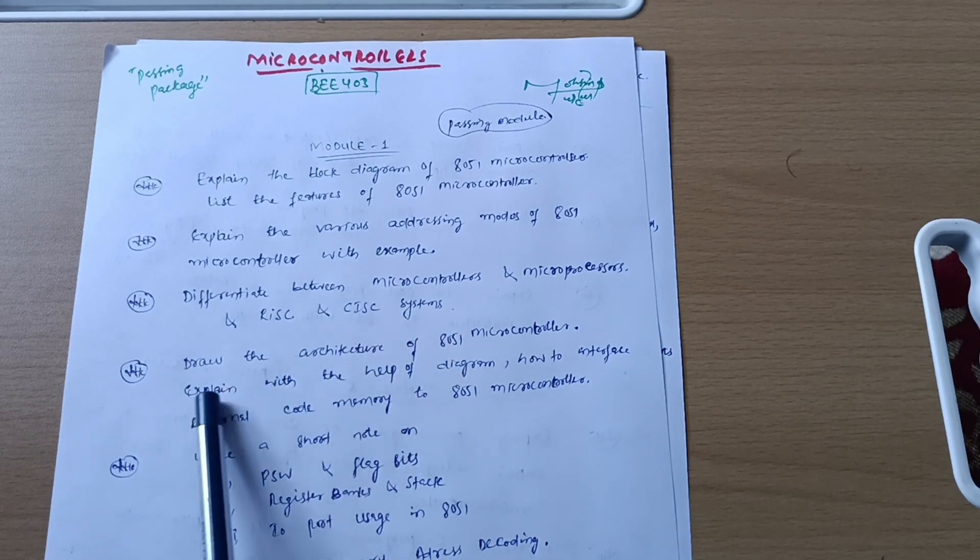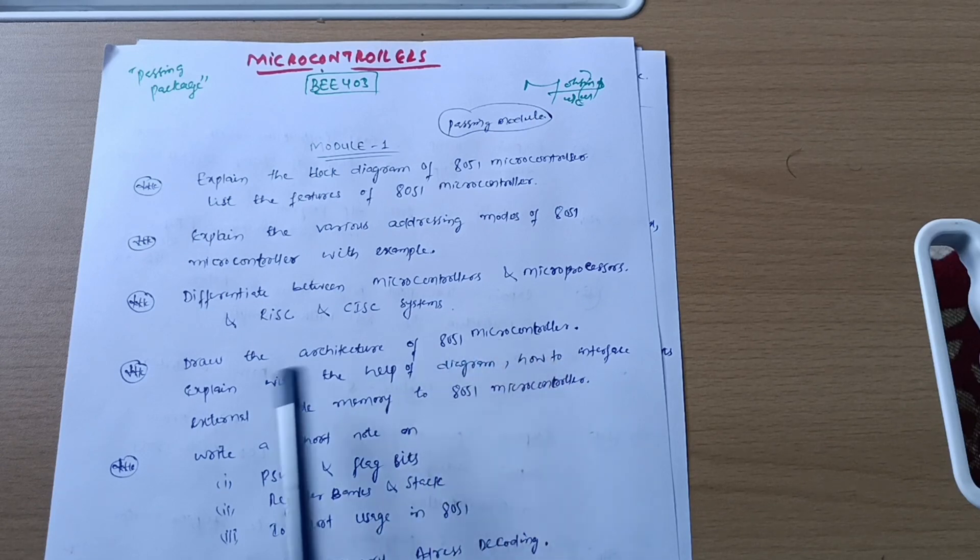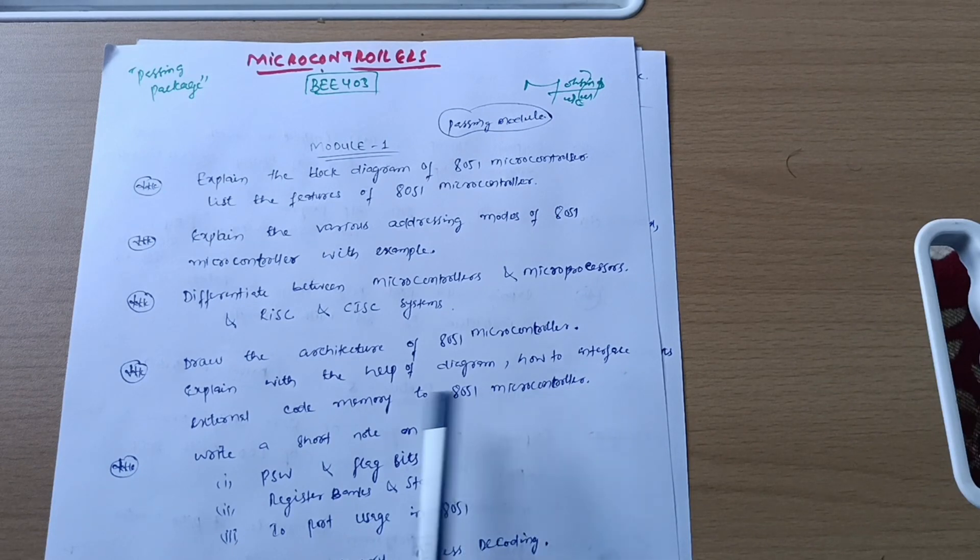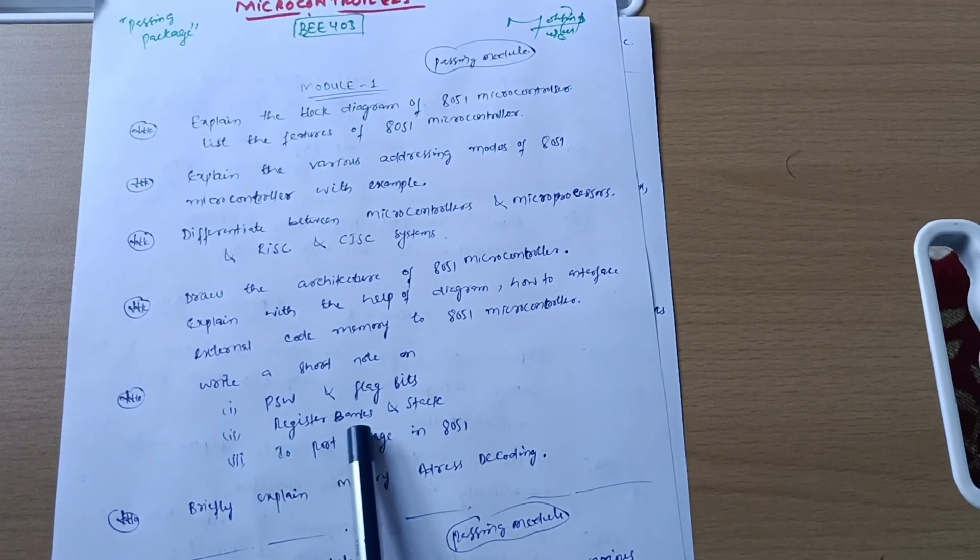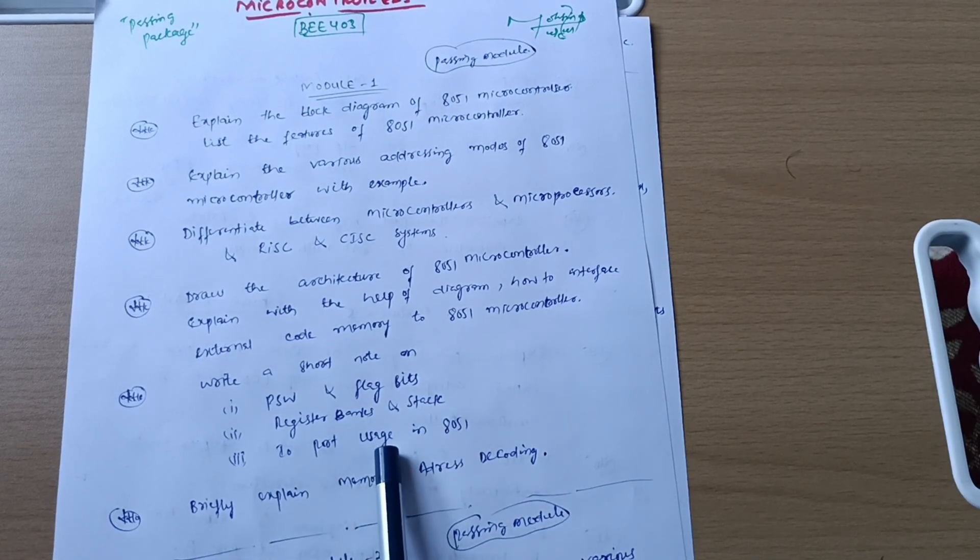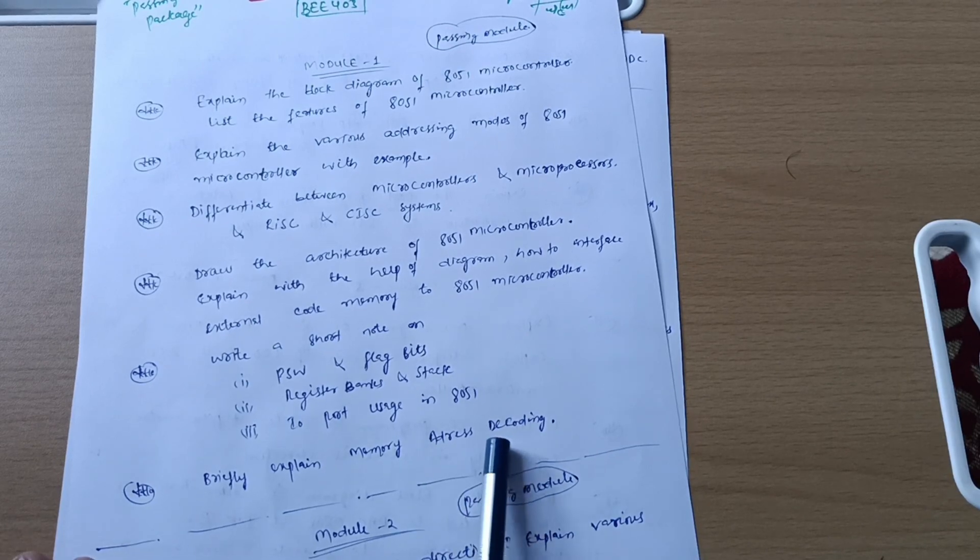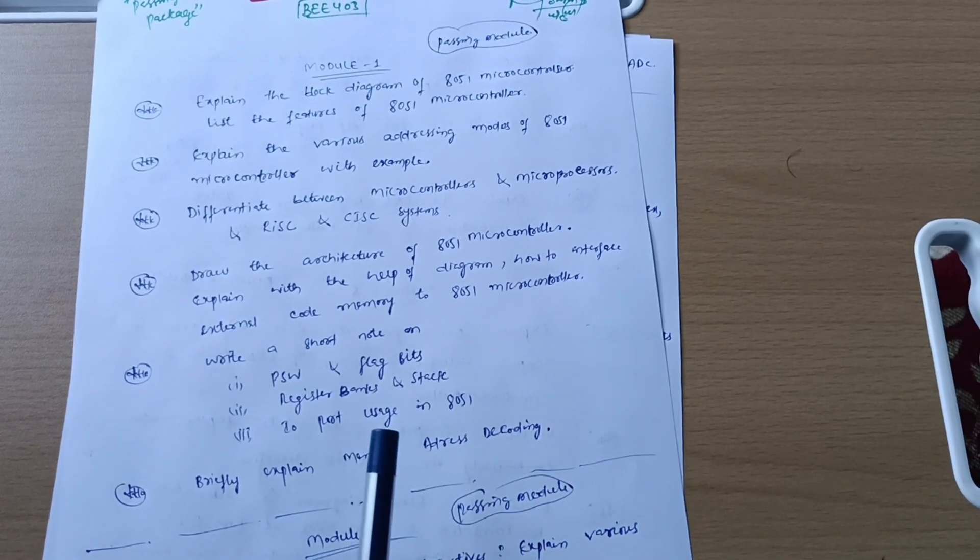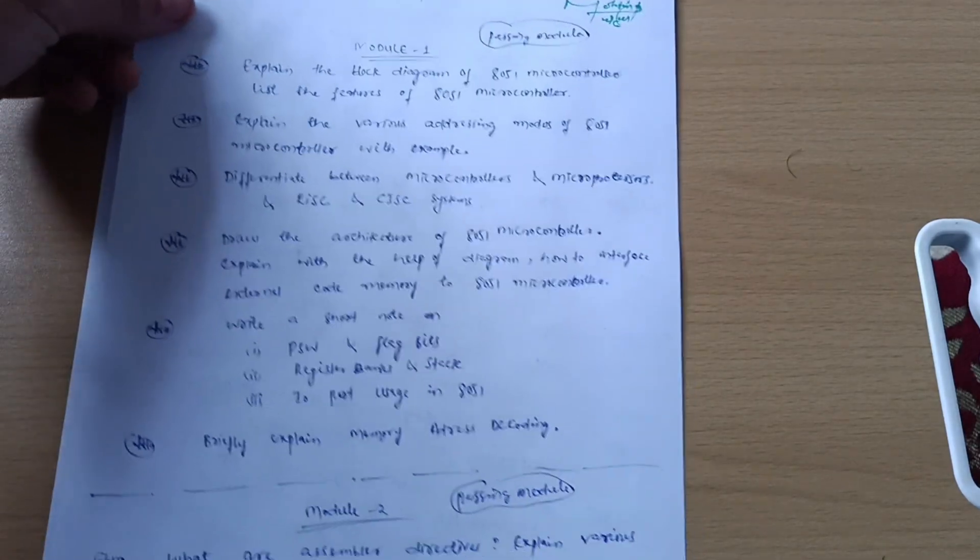Draw the architecture of 8051 microcontroller. Explain with the help of diagram how to interface external code memory to 8051 microcontroller. Write a short note on PSW and flag bits, register banks and stack, I/O port usage in 8051. And last, briefly explain memory address decoding. These are all questions from Module 1 and it is a passing module, so go through these six questions surely.